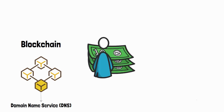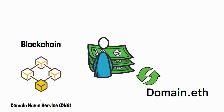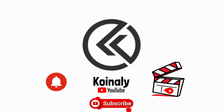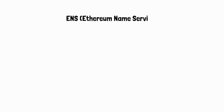Imagine only paying about 5 US dollars for your domain name per year, or about 50 US dollars for 10 years. This is a lot cheaper than the 2-year premium plans from regular DNS providers. That's absolutely incredible. Today we are going to discuss about ENS, also known as Ethereum Name Service.